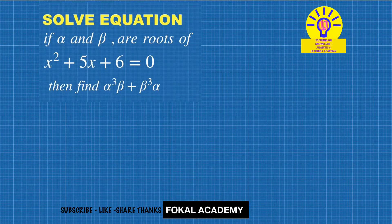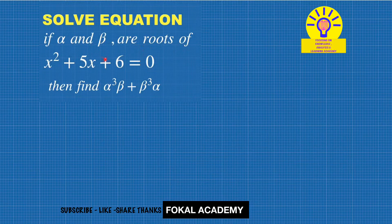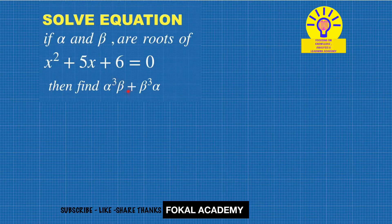Come to the problem. See here, this problem: solve the equation. If α and β are the roots of x² + 5x + 6 = 0, then find the value of α³β + β³α.